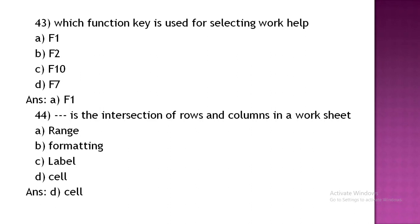Which function key is used for getting Word help? Option A: F1. Option B: F2. Option C: F7. The correct answer is Option A, F1.